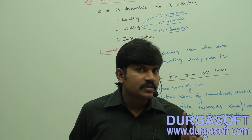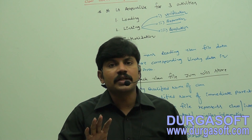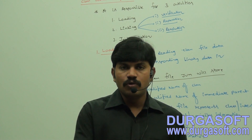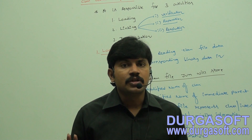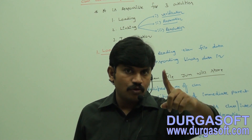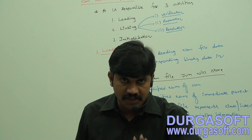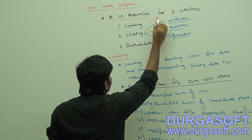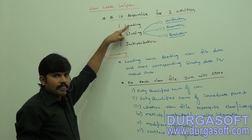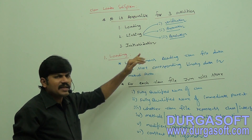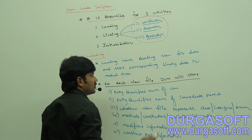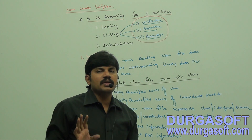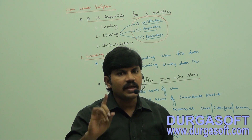The three activities of the class loader subsystem are: first, loading; second, linking; and third, initialization. Strictly speaking, it is responsible for these three activities. Linking contains sub-phases — verification, preparation, and resolution — which we will discuss later. So class loader subsystem is responsible for loading, linking, and initialization.